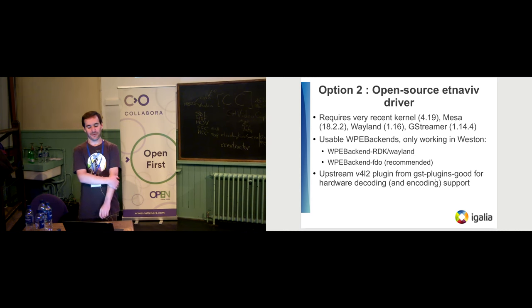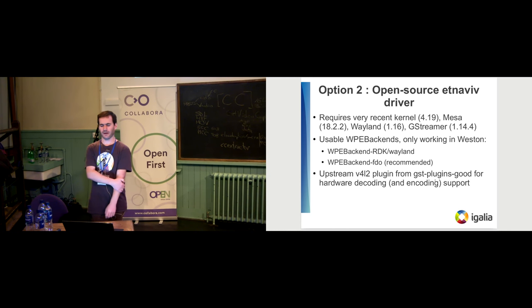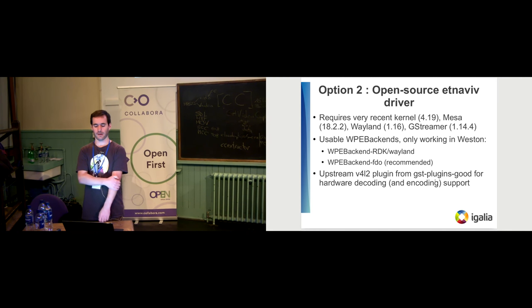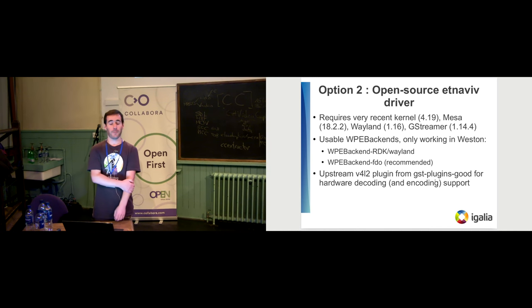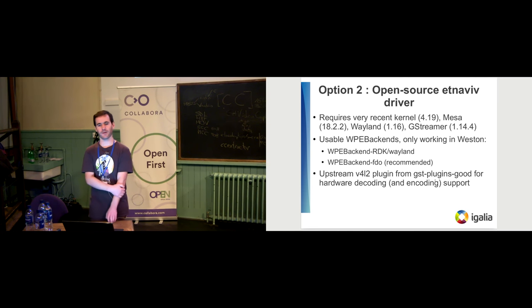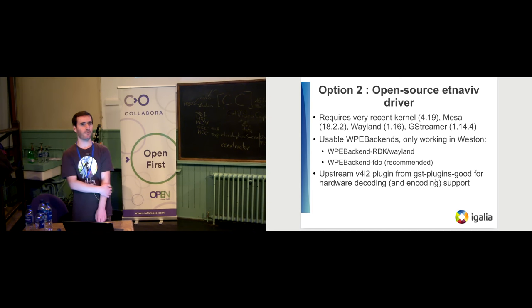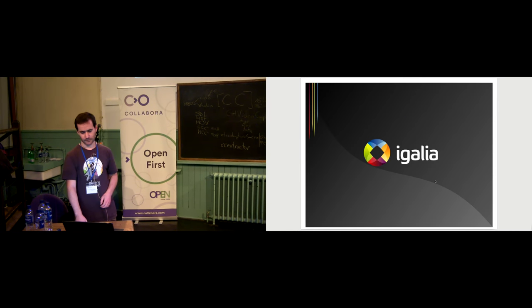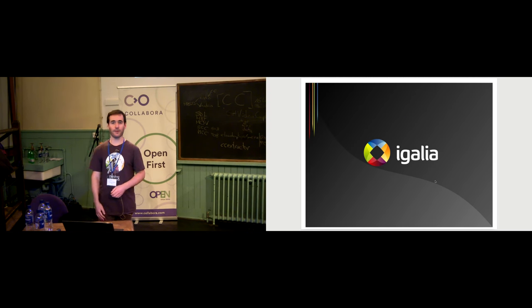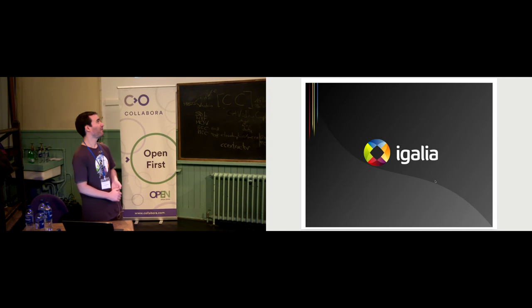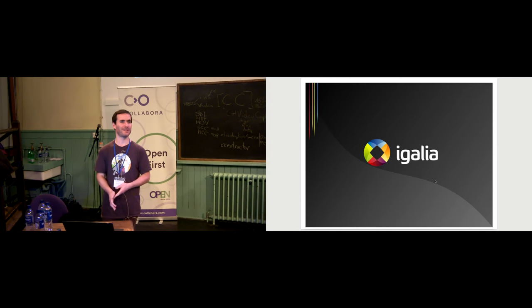With the open source option, the backends you can use are mainly the RDK Wayland backend — I was told it's working but haven't tested it — and I use the FDO backend. For playback you can use the Video4Linux plugin. I use some patches still in Bugzilla for the GL DMA-buf upload support, but besides that upstream mainline works out of the box. Thank you for listening — if you have any questions I'll be happy to answer.